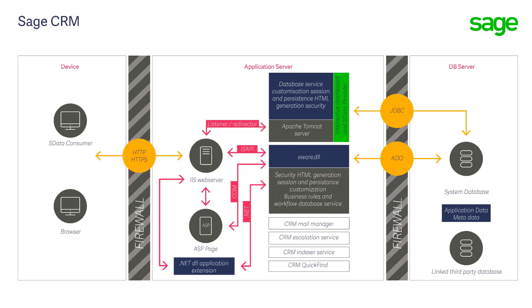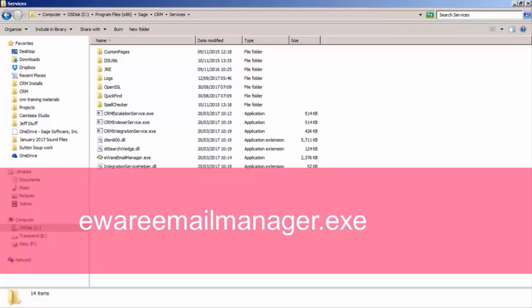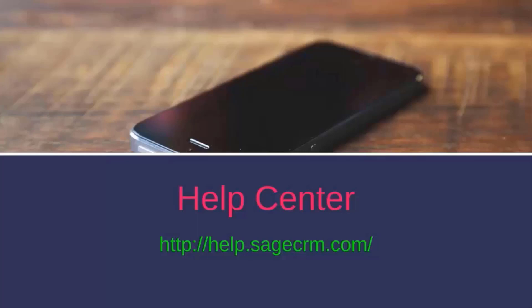Advanced Email Management functionality is installed automatically with any CRM installation. The Advanced Email Management service runs as a background process on the server. You'll find that this is a file called eware-email-manager.exe and it processes inbound emails according to predefined business rules. The functionality requires the completion of some setup tasks by the system administrator. The Email Manager can also be made available whether you use CRM's embedded email editor or another email client to handle outbound mail. It is also available for forwarding information from inbound mails into your CRM system.